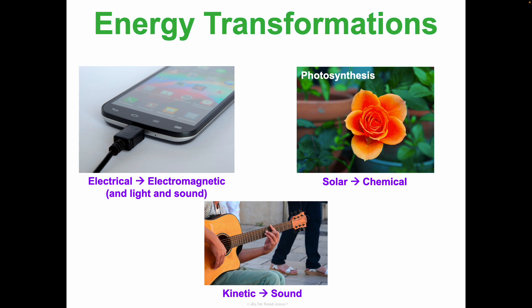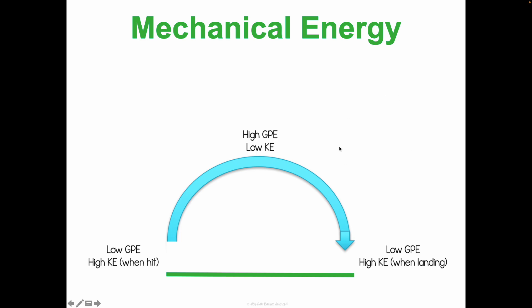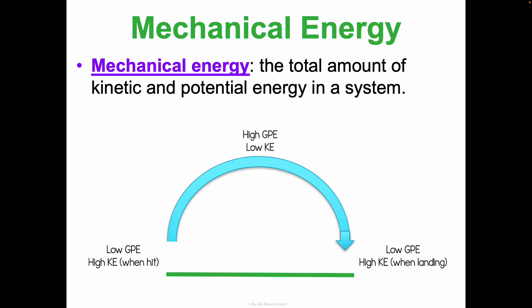Energy is a little more complicated and covers so much, so we're building on what we've learned. I want to introduce a new type of energy: mechanical energy — the total amount of kinetic and potential energy in a system. Think back to the pendulum lab and the energy skate park activity, where the total energy wasn't changing. That total energy in the system is the mechanical energy. In a pendulum or skateboarder, kinetic and gravitational potential energy constantly convert back and forth, so it's easier to look at the overall mechanical energy.